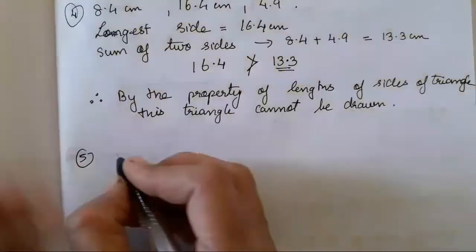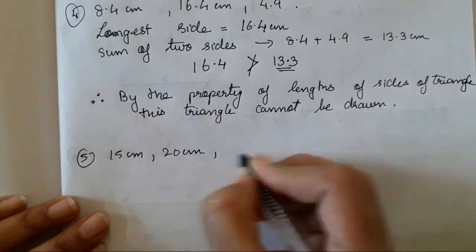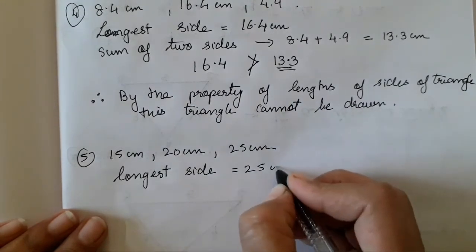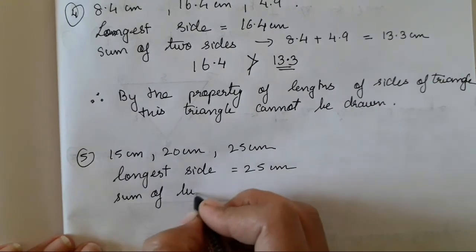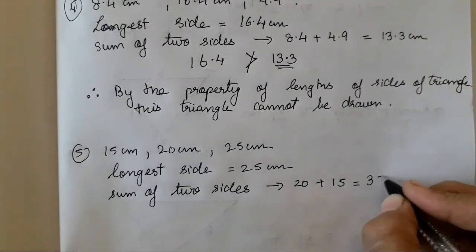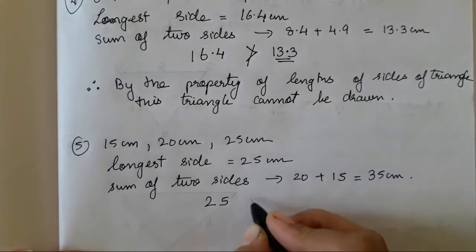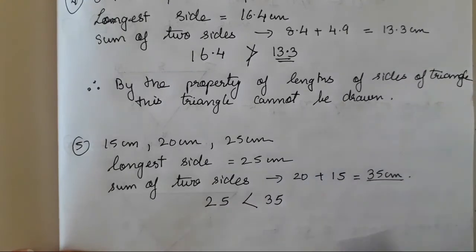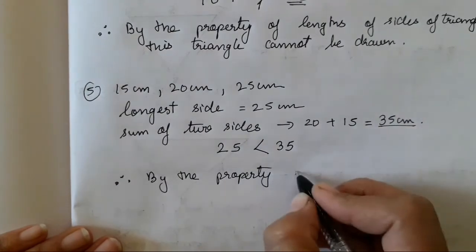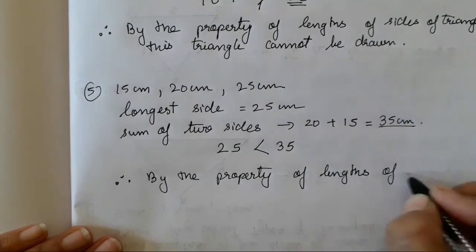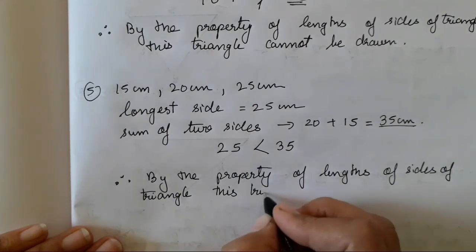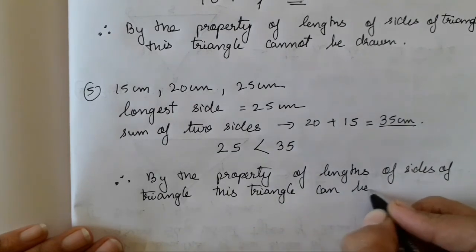The fifth sum has sides 15 cm, 20 cm, and 25 cm. The longest side is 25 cm. The sum of the other two sides is 20 plus 15, which equals 35 cm. Since 35 is greater than 25, the sum of the two sides is greater than the longest side. Therefore, by the property of lengths of sides of a triangle, this triangle can be drawn.